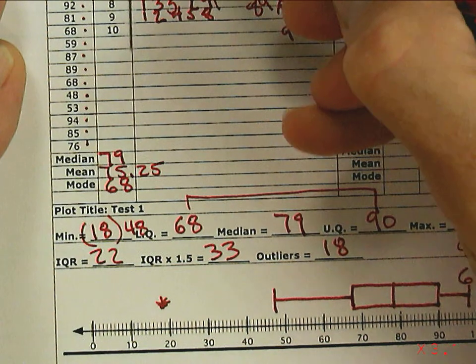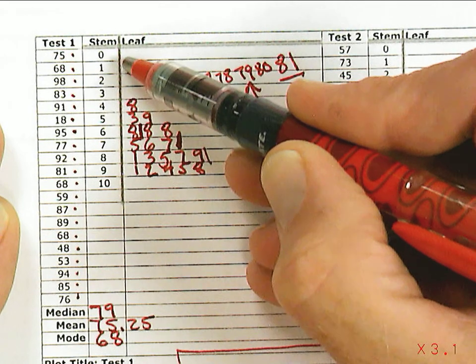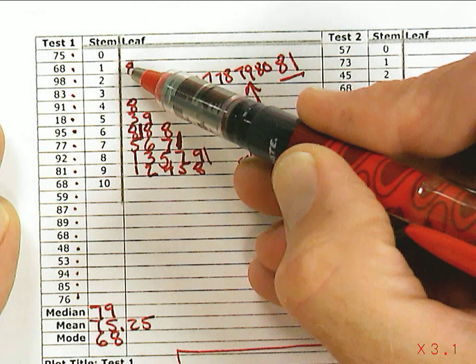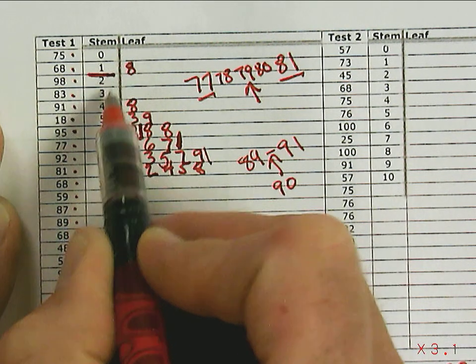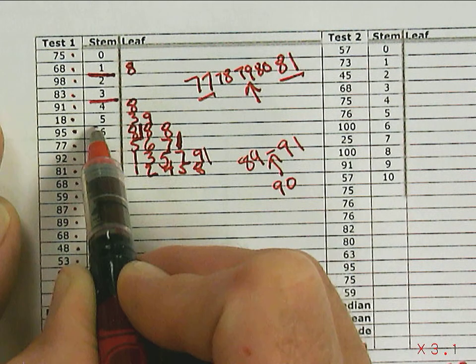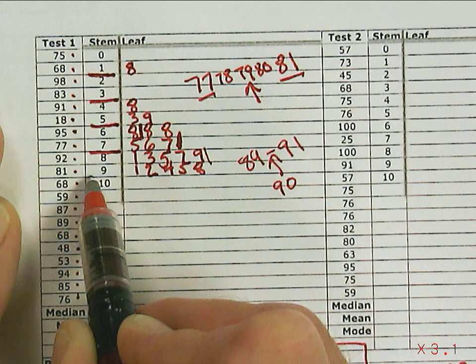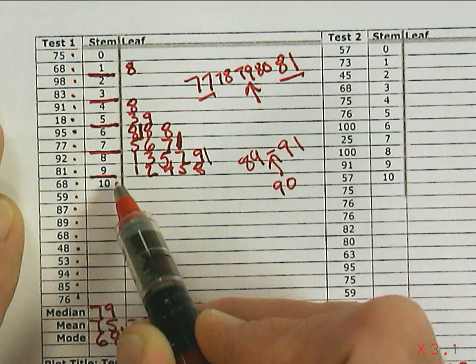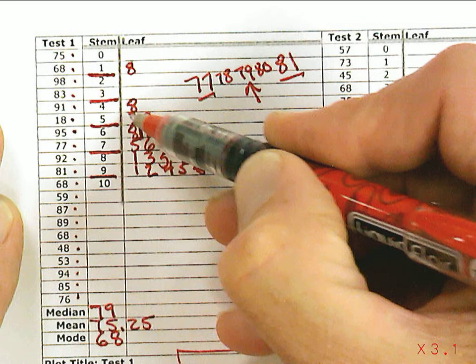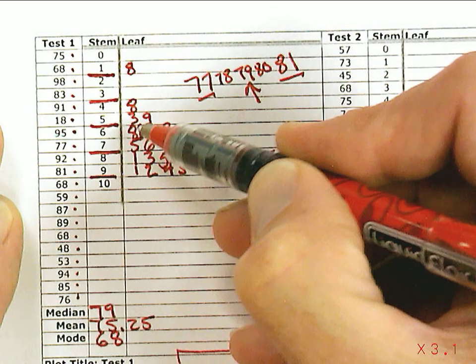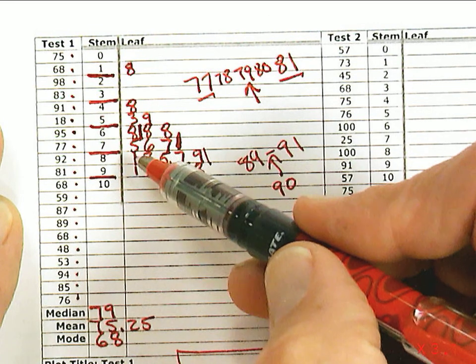If I go up to my data set and find all the ones from 0 to 20, there's just 1. Our stems are the intervals: 0 to 20, 20 to 40, 40 to 60, 60 to 80, and then 80 to 100. There's 1 in that first interval, none in the second, 3 here, 1, 2, 3, 4, 5, 6 in this interval, and lots in this interval: 1, 2, 3, 4, 5, 6, 7, 8, 9, 10.